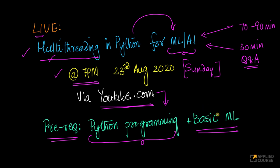If you know some machine learning algorithms, you will be able to better appreciate how multithreading is used. For example, we will discuss something like logistic regression — we will see how you can use multithreading to speed up logistic regression training. We will also discuss how multithreaded code can be written specifically for data science and machine learning applications.